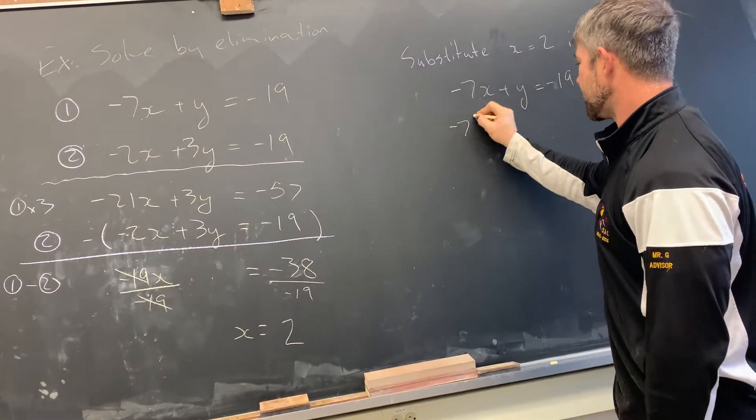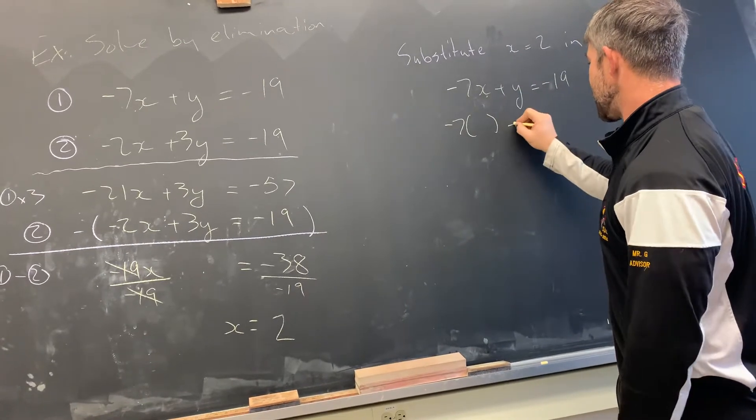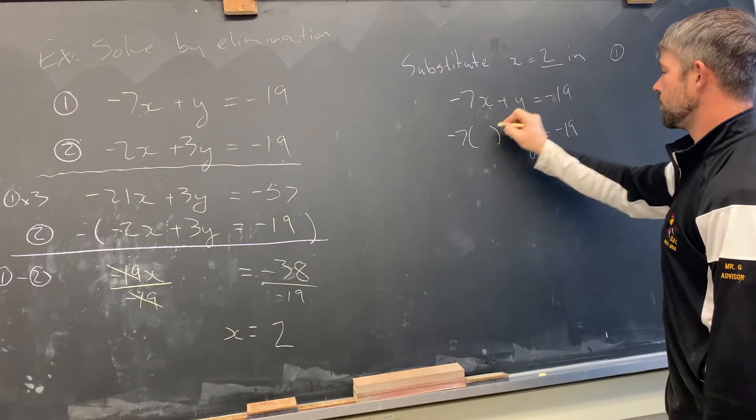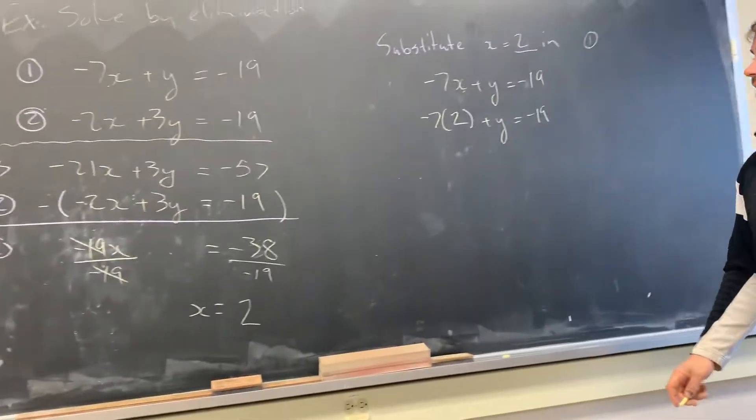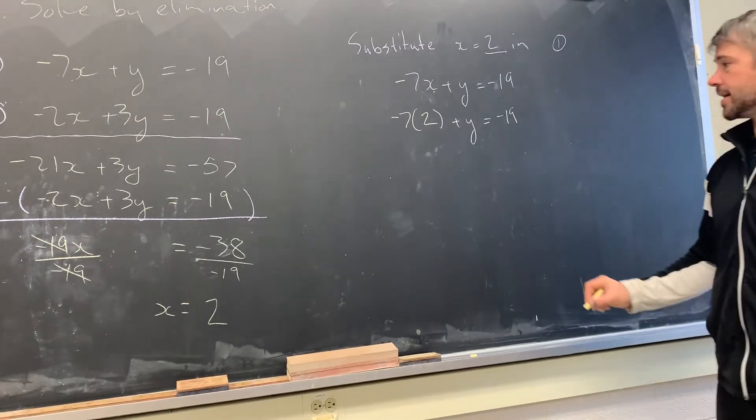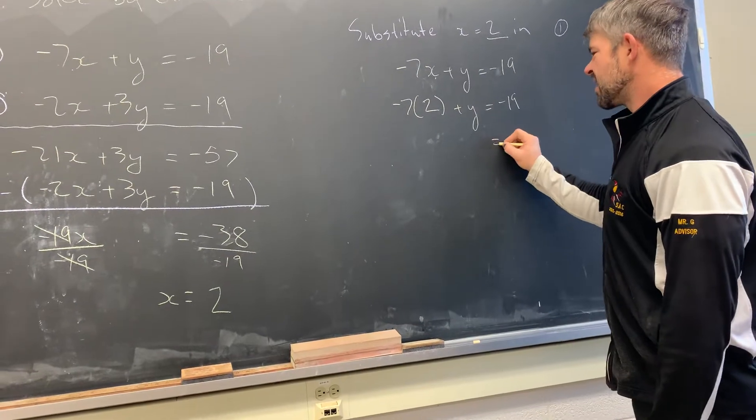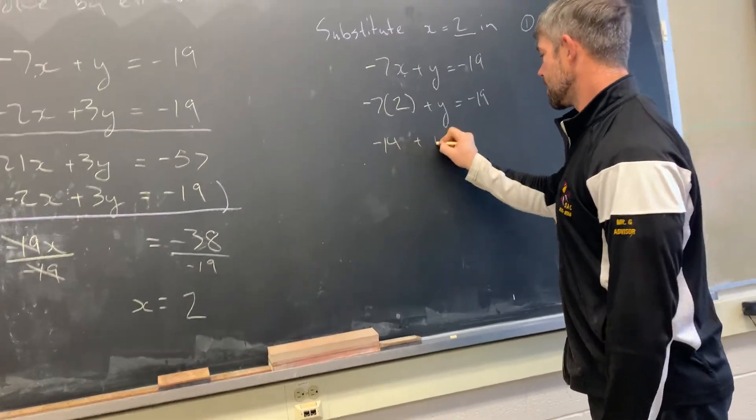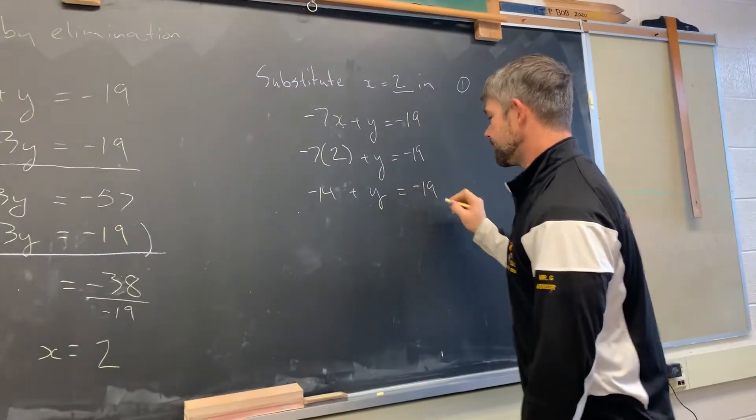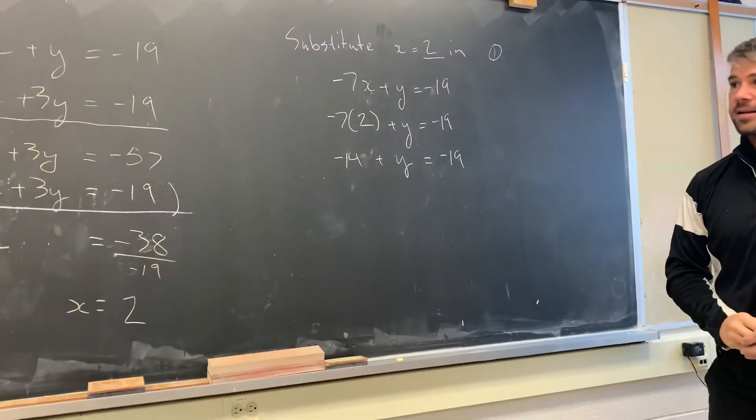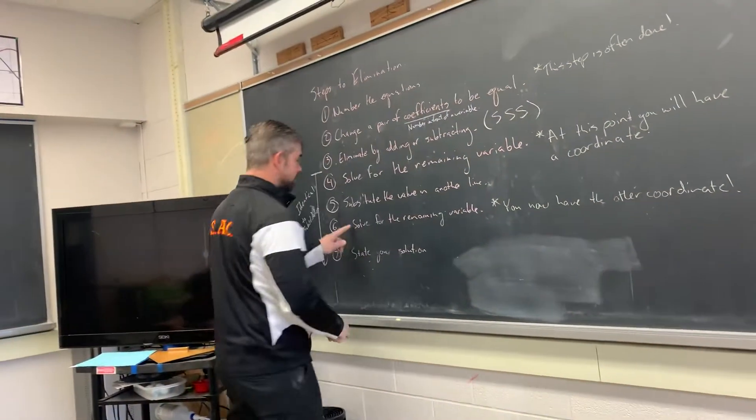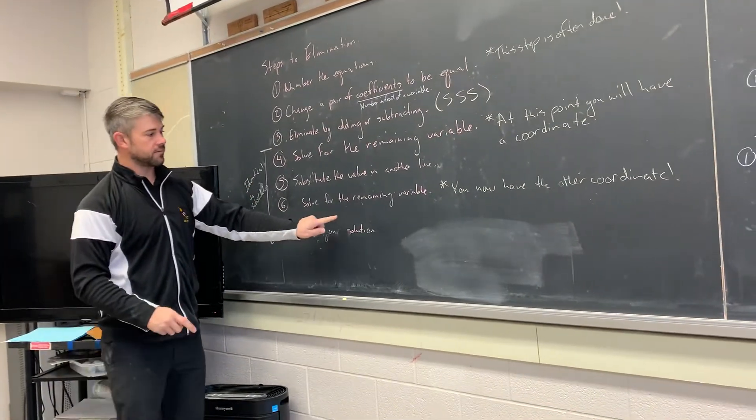So I'll write out all of line 1. And now I'll write it out again. But instead of writing the x, I'm going to write the value that I had found in my previous step, which was 2. So I have negative 7 times 2 plus y equals negative 19. I think I'll simplify this. That's going to be negative 14 plus y equals negative 19. And moving back over here that that substitution is done. I just have to solve for the remaining variable.